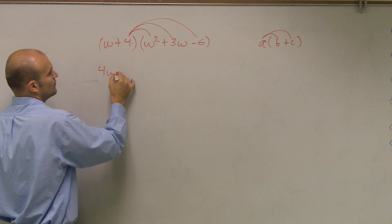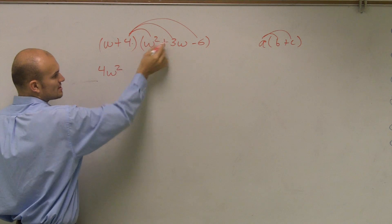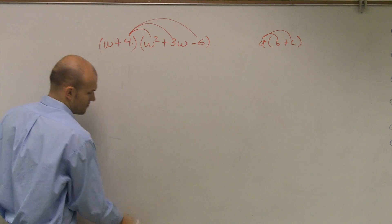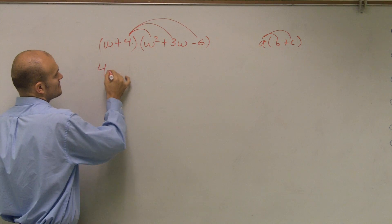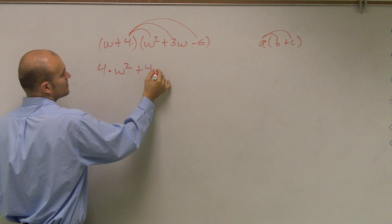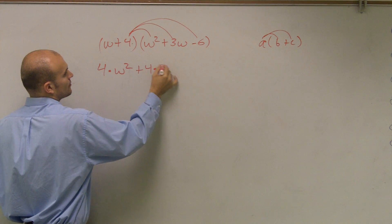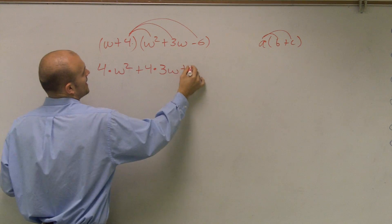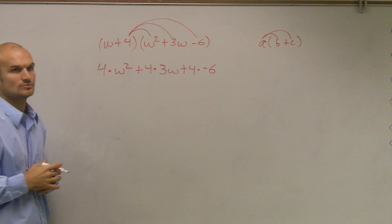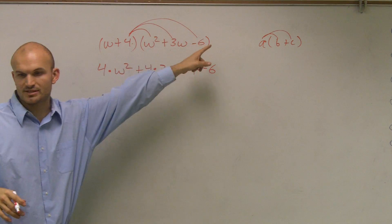so 4 times w squared is 4w squared, 4 times 3w, actually let's write it out for you. 4 times w squared, then you do positive 4 times 3w, then you do positive 4 times a negative 6. Okay? So I multiply the 4 times everything, everybody see that?